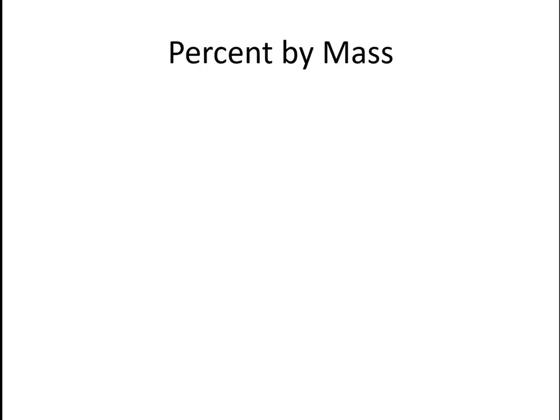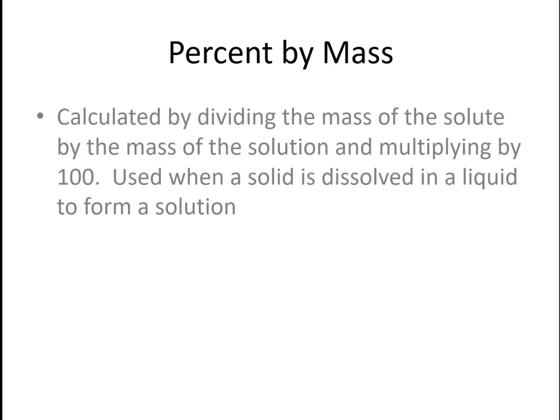So when we're calculating percent by mass, the thing to remember is that we are calculating it by dividing the mass of the solute by the mass of the solution and then multiplying by 100. And we usually use this when a solid is dissolved in a liquid to form our solution.